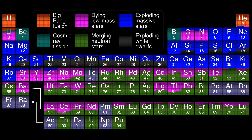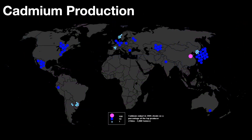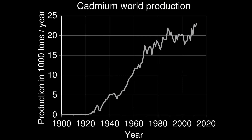The universe produces some cadmium in merging neutron stars — pretty exotic — with about equal amounts also produced in dying low-mass stars. Here on Earth, the main suppliers of cadmium are not surprisingly also the main suppliers of zinc. China, with almost one-sixth of the world's cadmium production, is closely followed by South Korea and Japan. The world now produces about 25,000 metric tons per year, and this figure does not include U.S. production, whose numbers are withheld for some odd reason.